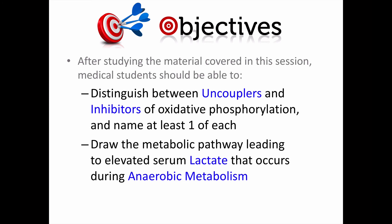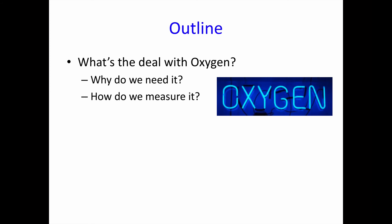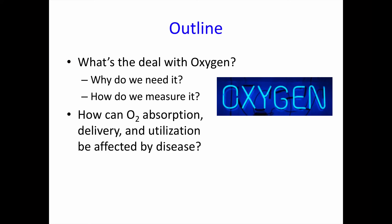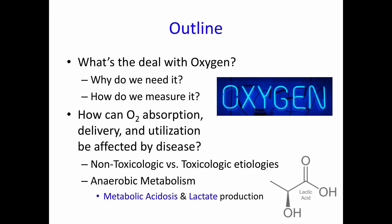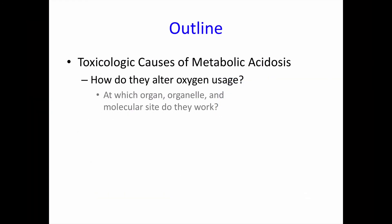You should also be able to draw the metabolic pathway leading to elevated serum lactate levels that occurs during anaerobic metabolism. Here I'm giving an outline of the structure of this presentation. First, we're going to consider what's the deal with oxygen — why do we need it and how do we measure oxygenation clinically. Then we'll look at ways oxygen absorption, delivery, and utilization are affected by various disease states, comparing non-toxicologic versus toxicologic etiologies, and how these lead to anaerobic metabolism, which results in a metabolic acidosis with an increased serum lactate. Then we'll look specifically at some toxicologic causes of metabolic acidosis in more detail, considering how they alter oxygen usage — determining at which organ, organelle, or molecular site they cause this interference.